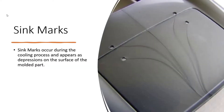We will start by knowing what sink marks are. Sink marks occur during the cooling process and appear as a depression on the surface of the molded part. The figure indicates the sink marks produced on it during the cooling process. Now let's turn to SOLIDWORKS to find out the sink marks on the model and the remedies to solve it.